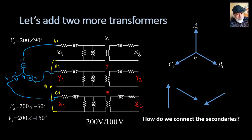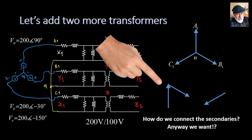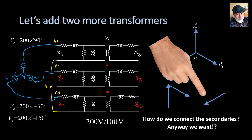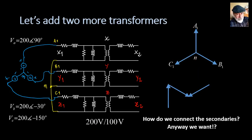The answer is surprising: any way we want. Let's see how that works. Let me connect the non-dot of Y2 to the dot of X2. Let me connect the dot of Z2 to the dot of Y2. Let me give names to each one of the phasors to know which coil we're talking about and which terminal is the dot and which is the non-dot — coil X2, dot, non-dot, etc.